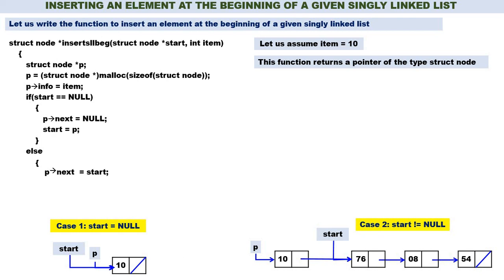Should start point to 76 or 10? Start should come to 10, because the node containing 76 is no longer the first node — the node containing 10 is the first node. Therefore we change start: start = p. Both cases are complete. We return the value of start. That's all the function — very simple. Inserting an element at the beginning of a singly linked list is very simple.